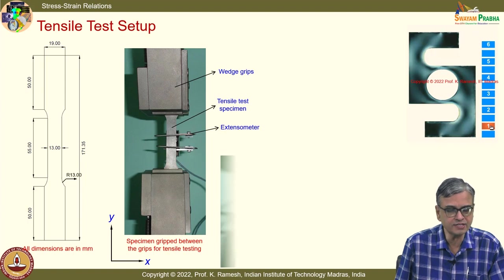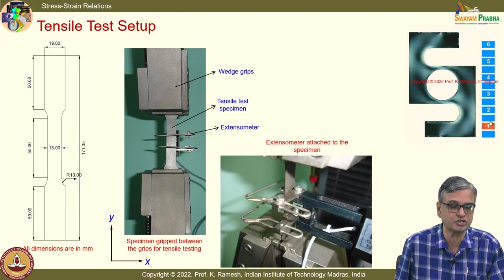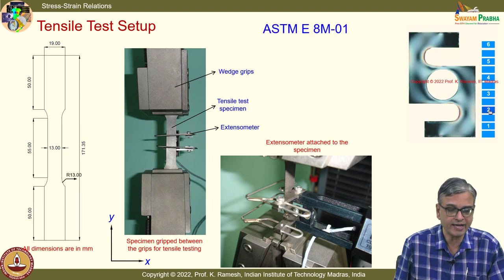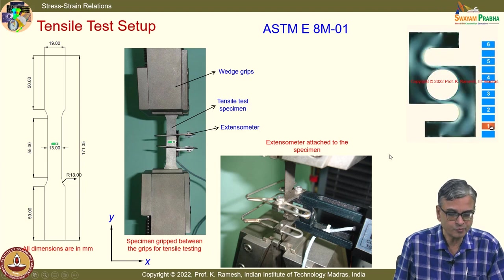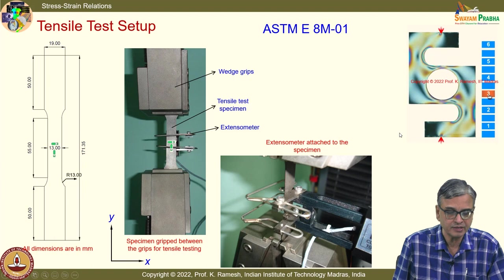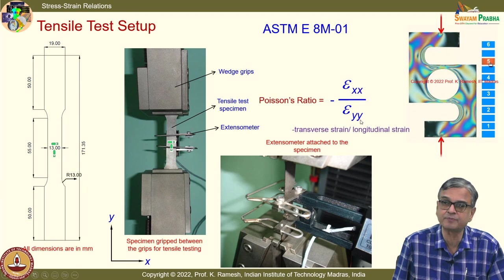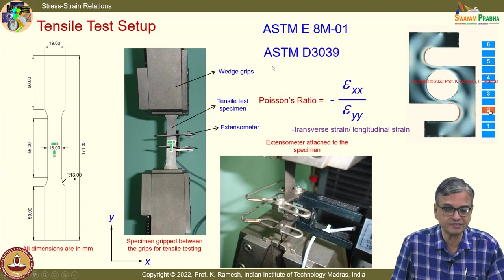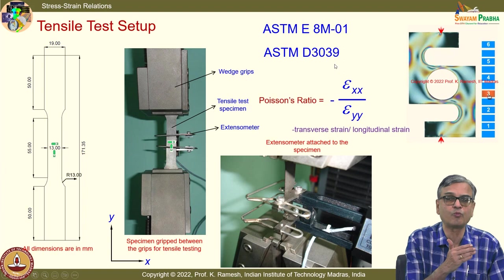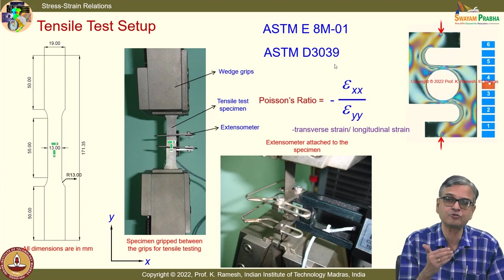You can also use the same tension test to find out the Poisson's ratio. You put a strain gauge transverse to the loading and measure the strain transverse as well as along the loading direction. Poisson's ratio is given as minus of transverse strain divided by the longitudinal strain. ASTM standard D3039 lists out what precautions you need to take.